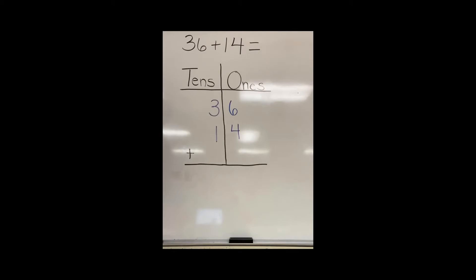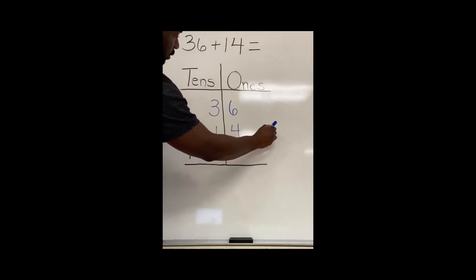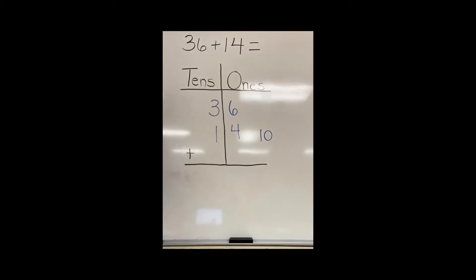The first thing that I want to do is add my ones place, six plus four. Six, seven, eight, nine, ten. I'm going to write the sum of my ones out to the right.